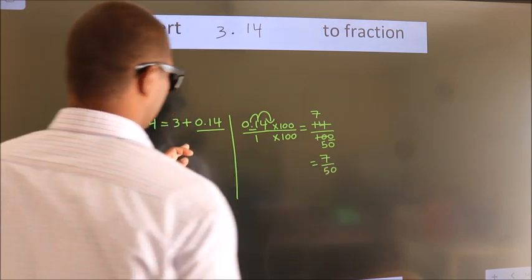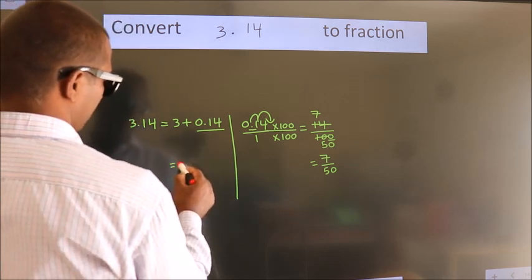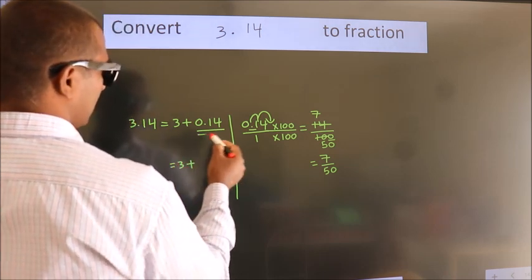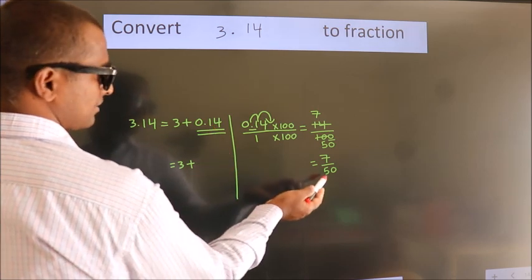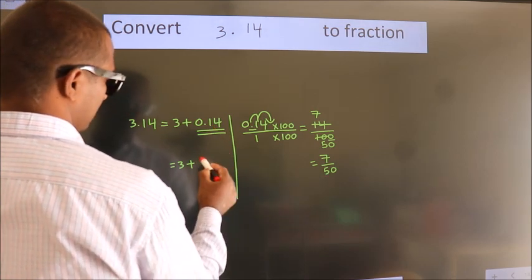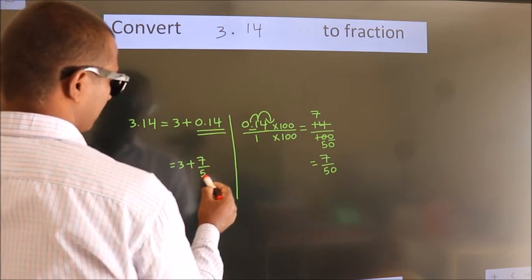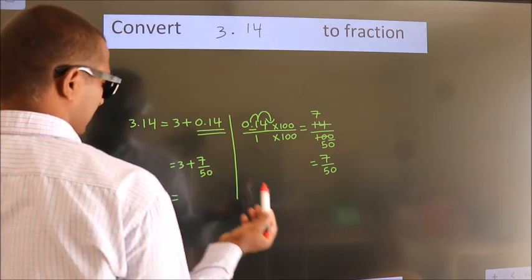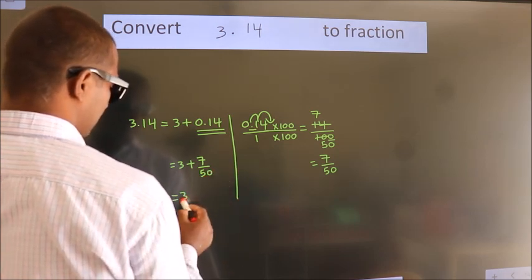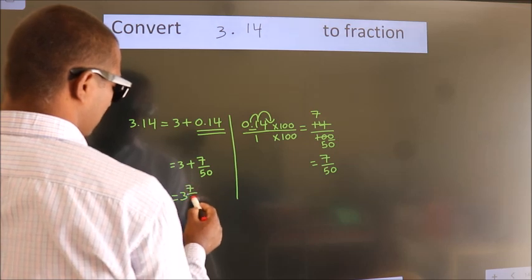Now here 3 plus, in place of 0.14, we write this fraction 7 by 50. 3 plus 7 by 50. In mixed fraction it is 3 7 over 50.